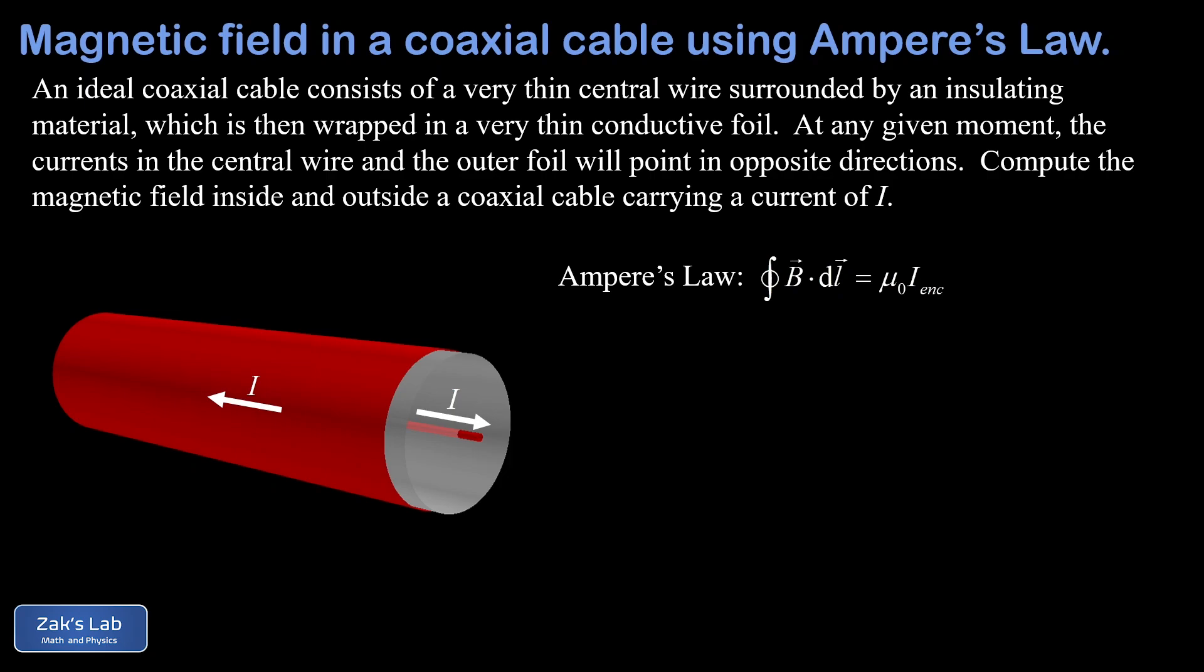Finally, in the normal operation of a coaxial cable, these currents are equal to each other and pointing in opposite directions. Of course, the plan here is to apply Ampere's Law to find the magnetic field inside and outside this cable.